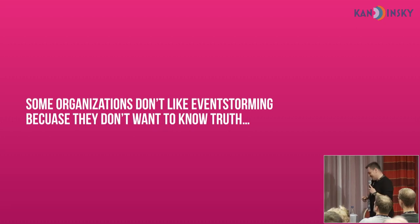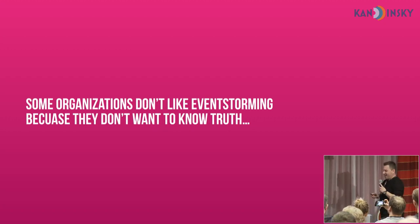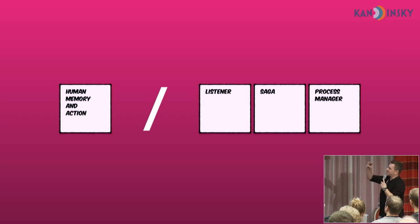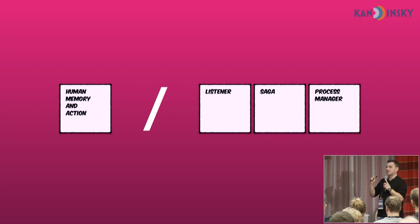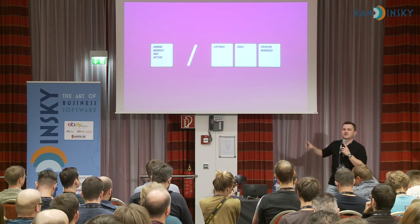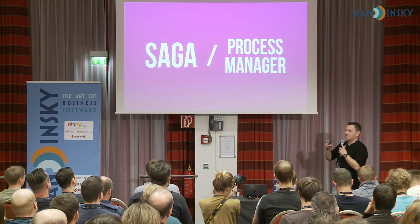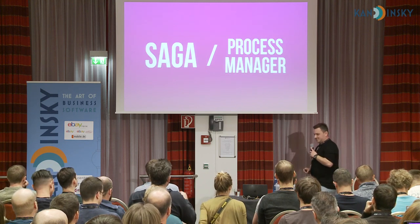This is probably the reason why some companies — especially large ones — don't like event storming: because they don't like the truth. For smaller and medium-sized companies, the attitude is more like 'let's fix it.' So back to the root: we've got two versions — the human memory and action, which is problematic, and implementations like listeners, process managers, and Saga. The listener is obvious, but the others are very interesting.